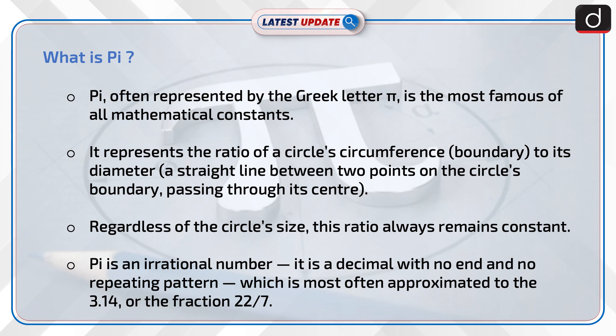It represents the ratio of a circle's circumference, i.e. boundary, to its diameter, i.e. a straight line between two points on the circle's boundary passing through its center. Regardless of the circle's size, this ratio always remains constant.